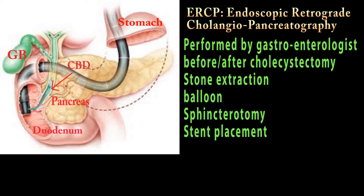Another approach to common bile duct stones is endoscopic retrograde cholangiopancreatography, or ERCP, performed by the gastroenterologist. It can be performed before or after cholecystectomy, and it obviates the need for surgical exploration of the common bile duct. The stones can be extracted, the sphincter can be divided to facilitate passage of stones, and a stent can be placed if stones are anticipated to persist. The stent can usually be removed four to six weeks after placement.